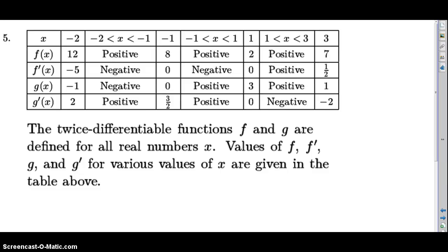Welcome to my video for the 2014 AP Calculus AB examination, free response question number five. We're given a table of values. Twice differentiable functions f and g are defined for all real numbers x. The values of f, f prime, g, and g prime for various values of x are given in the table, covering the interval from negative two up to positive three inclusive.